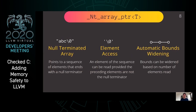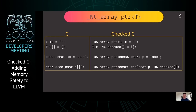The third type of pointer that Check C adds is _Nt_array_ptr. These are very similar to the array pointer. The only difference is that these point to a sequence of elements that ends with a null terminator. By definition, an element of the sequence can be read provided the preceding elements are not the null terminator. This gives rise to the observation that the bounds of an _Nt_array_ptr can be widened based on the number of elements read. The syntax uses the _Nt_array_ptr and the _Nt_checked keywords.